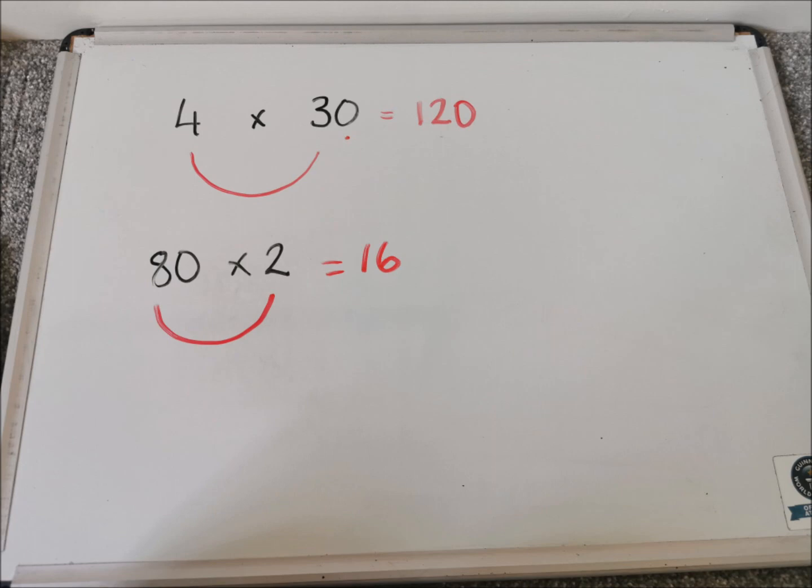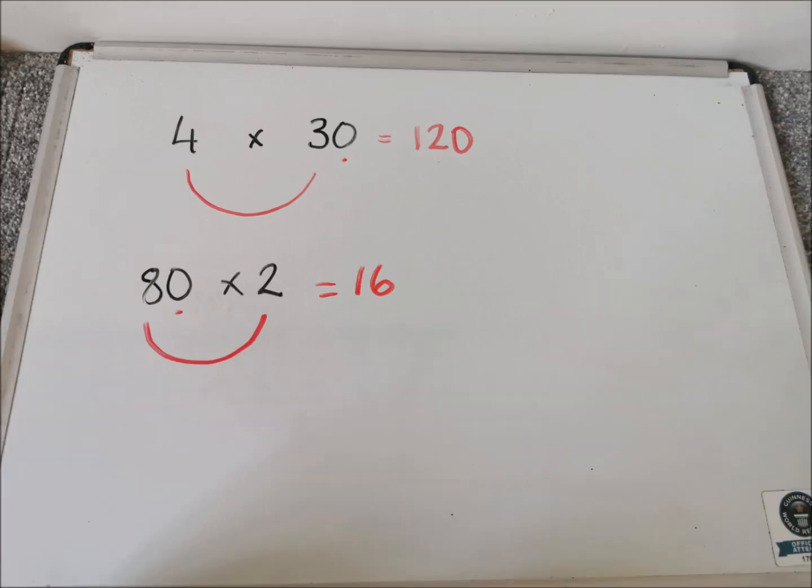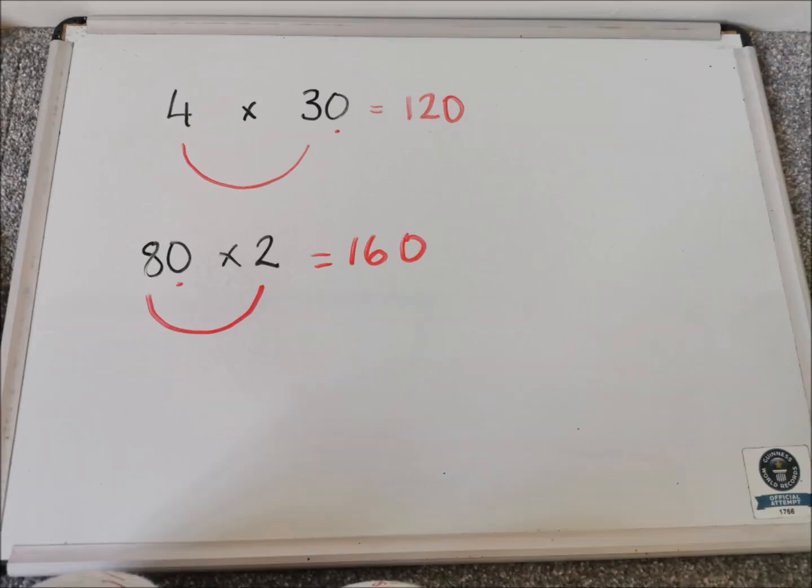And you can write that as part of your answer. The next step is to draw a dot underneath any zeros that you can see. So I've got one zero, one dot. So I add that into my answer. So my answer is 160.